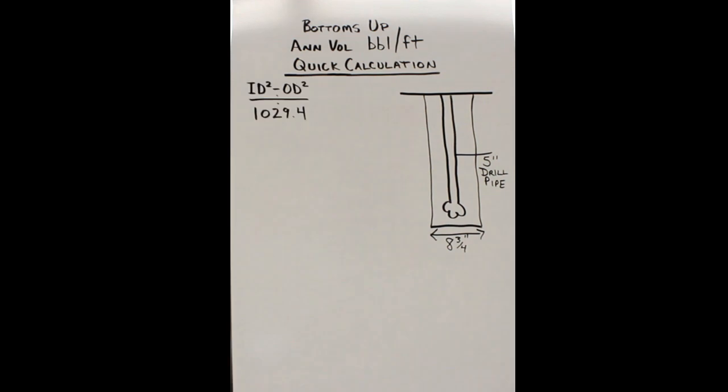Our calculation's going to be ID squared minus OD squared divided by 1029.4. You got the ID squared, which is the ID of that hole, and then you got the OD squared, which is the OD of the drill pipe. Now you got to take your 8 and 3/4 times 8 and 3/4, which is like 8.74, 8.75, equals 76.